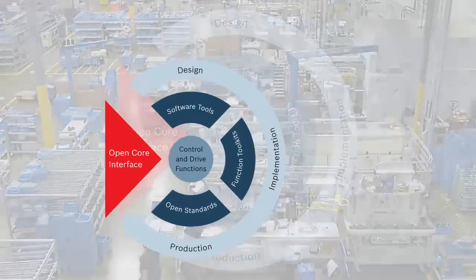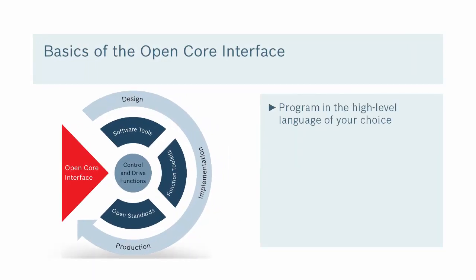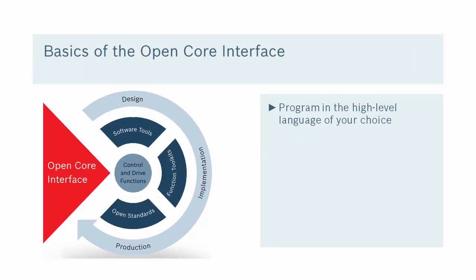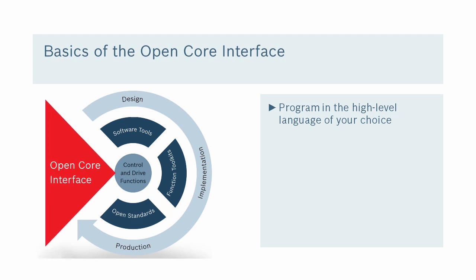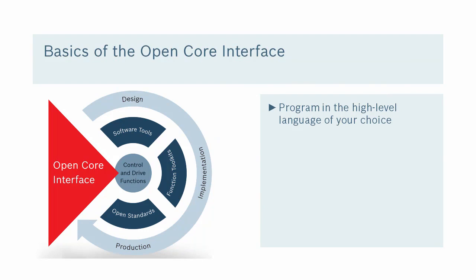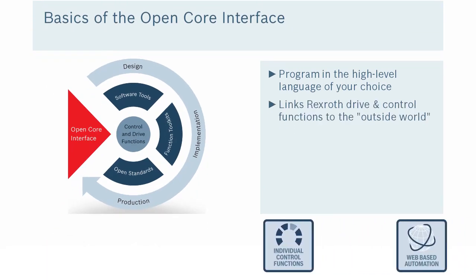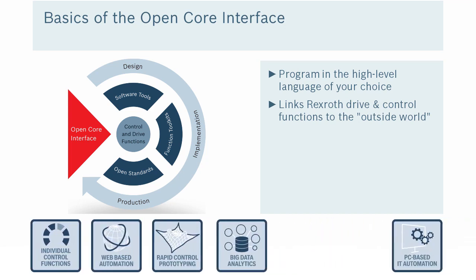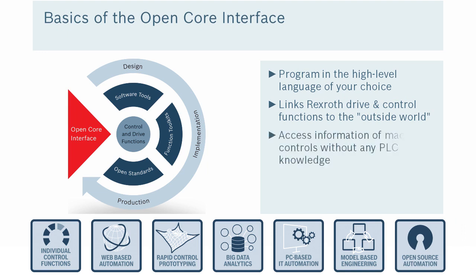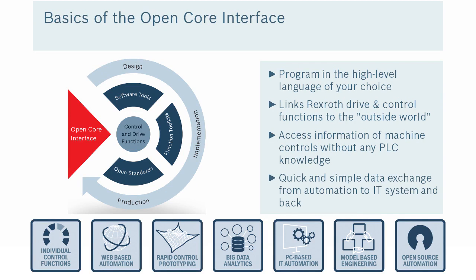The OpenCore interface is probably what most people are interested in. It's the new component and what connects us to the outer world. That's why it's drawn as sort of an arrow into our control and drive functions, or the core functions — it connects the outside world to our controller. One of the benefits is being able to connect our PLC automation to other things, like serving data up to supervisory or monitoring systems, with an easy way to get data where it needs to be without a lot of effort. The OpenCore interface is designed to provide that access.